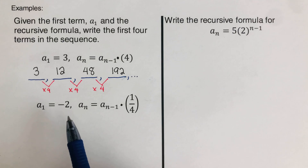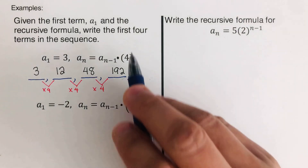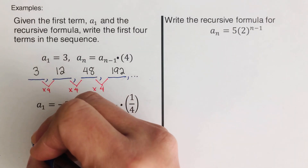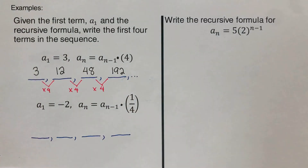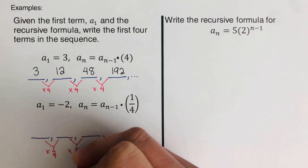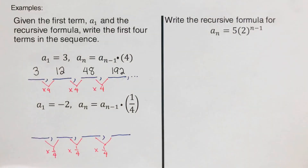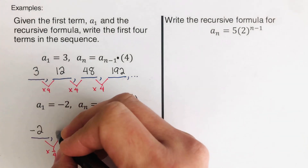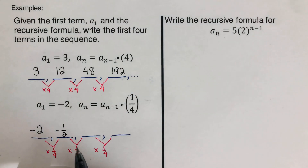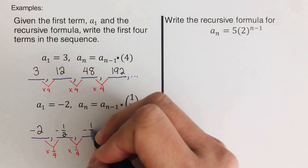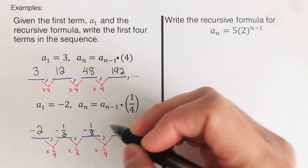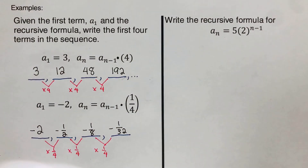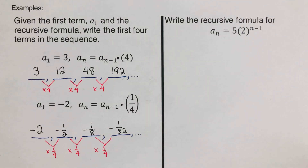Pause the video and try the next problem on your own, then check your answer. The first term here is negative 2. Negative 2 times one-fourth is negative one-half, negative one-half times one-fourth is negative one-eighth, and negative one-eighth times one-fourth is negative one over 32. The sequence continues to infinity.